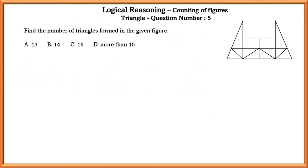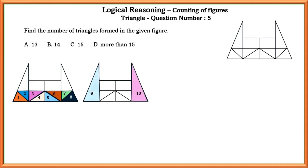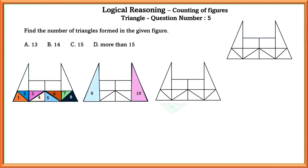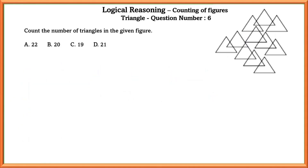Question number five: find the number of triangles formed in the given figure. Counting all the triangles: 8 plus 2 plus 3 plus 3 plus 2, which equals a total of 50 triangles.